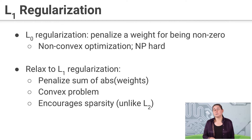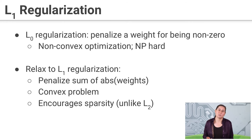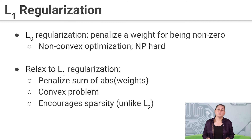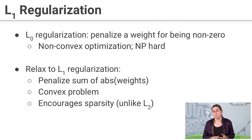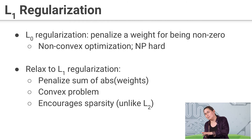What we'd like to do is explicitly zero out weights, and that's what we call L0 regularization — it penalizes you for having any weight that is not zero. But that's not convex, it's hard to optimize, it's sort of a combinatorial problem. Instead, we relax that to L1 regularization, which penalizes the sum of the absolute values of the weights. By doing that, we still encourage the model to be very sparse and drive a lot of those coefficients to zero. That's a little different than L2 regularization, which also tries to make the weights small, but won't actually drive them to zero.